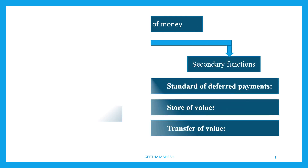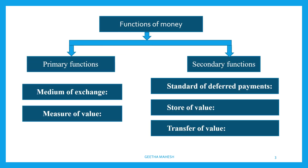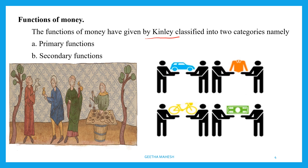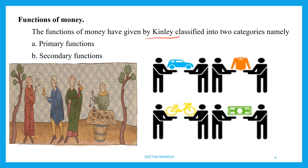The functions of money can be classified into two divisions: one is primary functions and another one is secondary functions. Primary functions are the basic functions — money acts as a medium of exchange and measure of value. Secondary functions include standard of deferred payment, store of value, and transfer of value. Professor Kinley broadly classifies the functions of money into these primary and secondary functions.